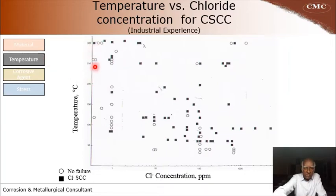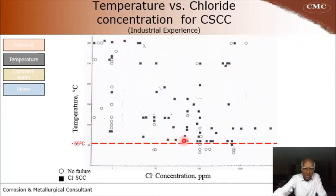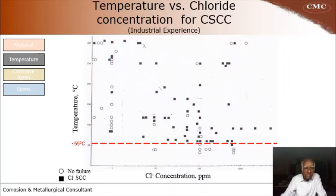The next parameter is temperature. What you see here is a summary of industrial experience — temperature versus chloride concentration for chloride stress corrosion cracking to occur. The dark points show where cracking has occurred. There is a well-accepted minimum temperature of about 55°C below which stress corrosion cracking does not take place. In the present case, our operating temperature of about 170°C is very well above 55°C, so the temperature condition is satisfied.